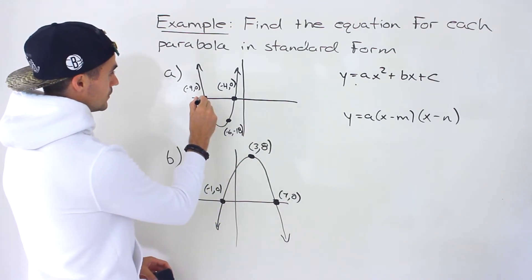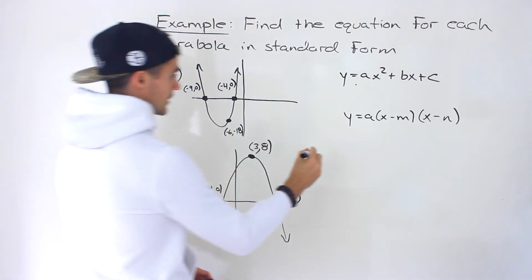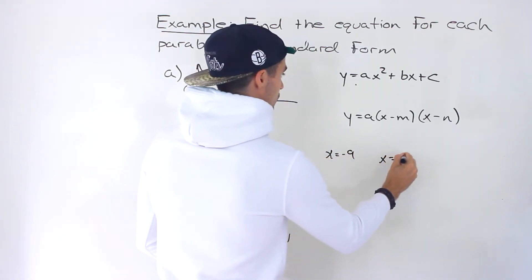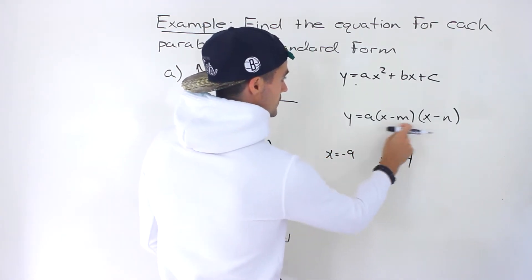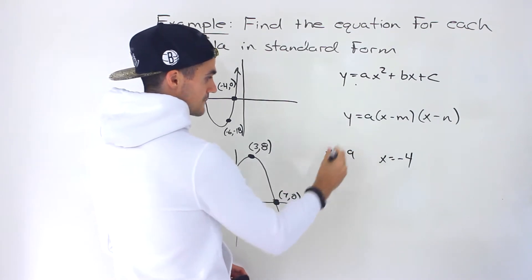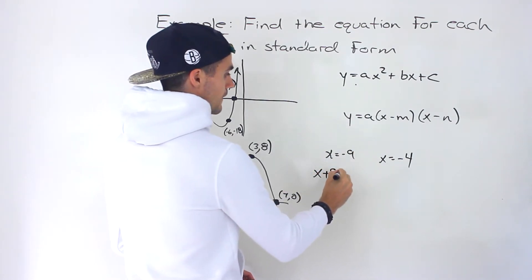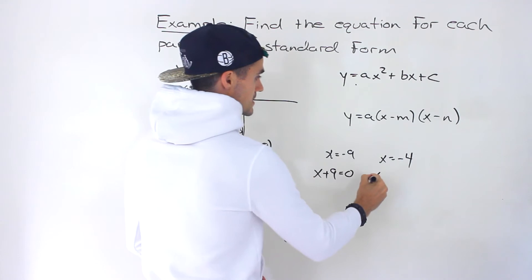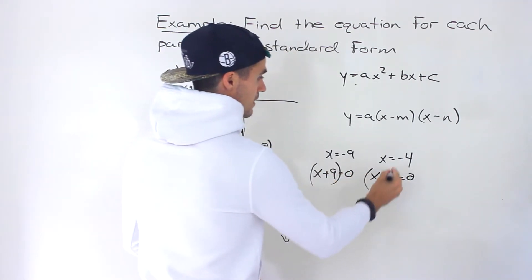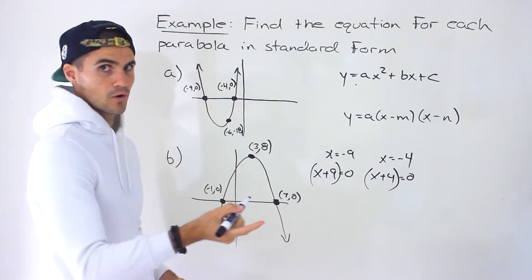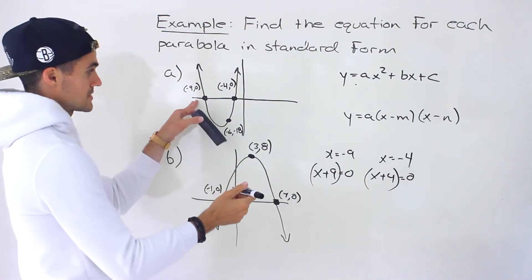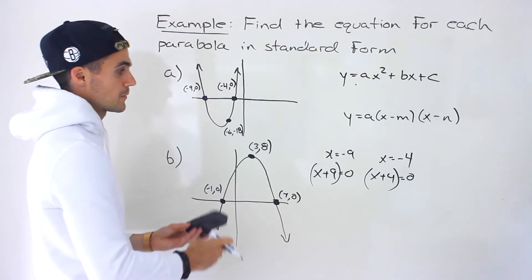Notice the two intercepts given are x equals negative 9 and x equals negative 4. To get the factors, you bring everything to one side to have zero on the right side. We end up with x plus 9 and x plus 4 as the two factors, where the x-intercepts negative 9 and negative 4 come from.